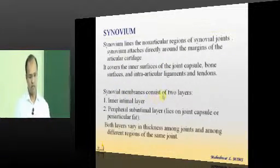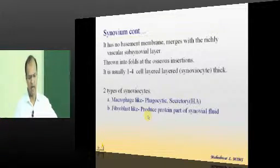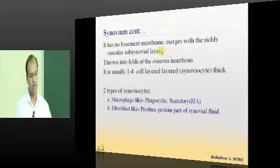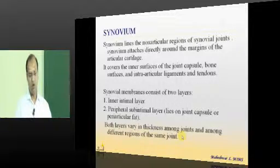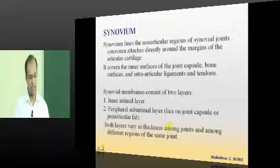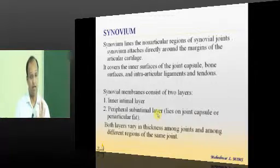Now this synovial membrane consists of two layers actually. These are sheets of cells without any basement membrane, inner intimal layer and peripheral sub-intimal layer. It directly attaches itself to the capsule. Both layers vary in thickness among various joints and in different portions of the joints, the thickness of these layers vary.